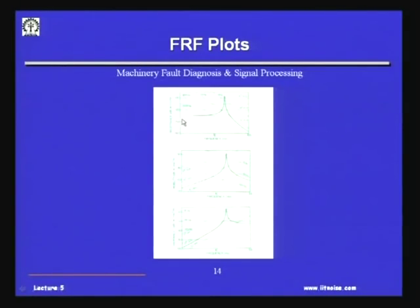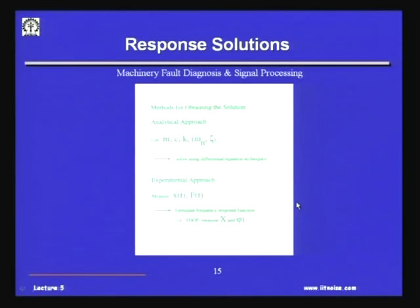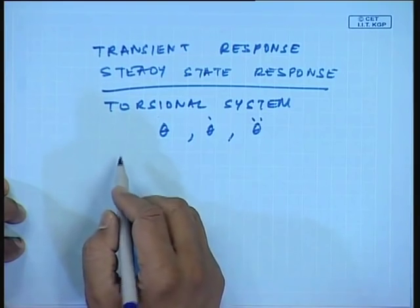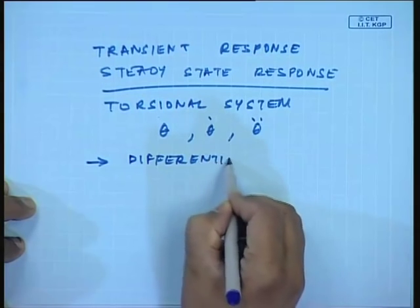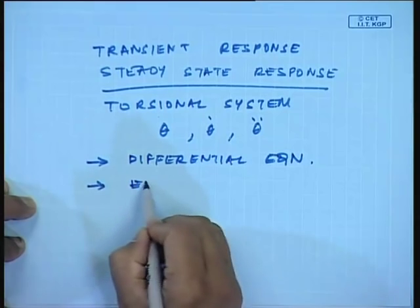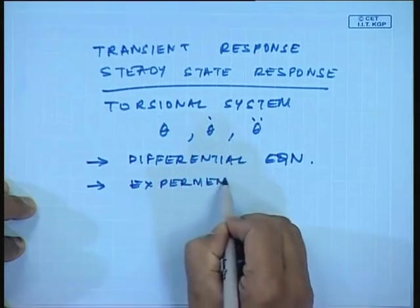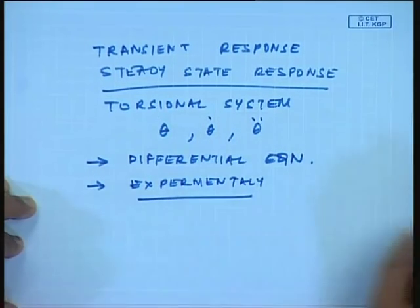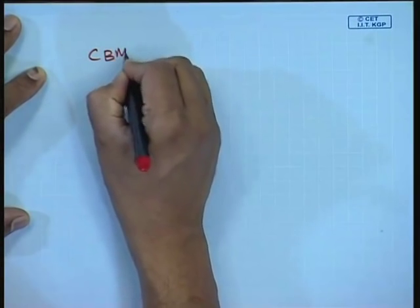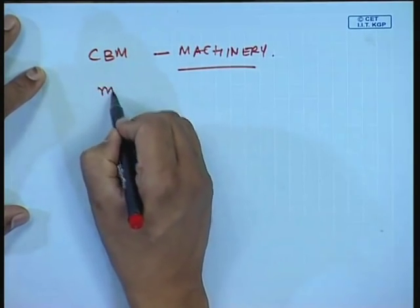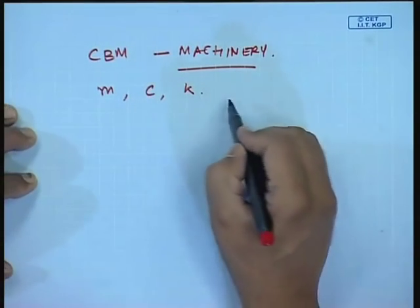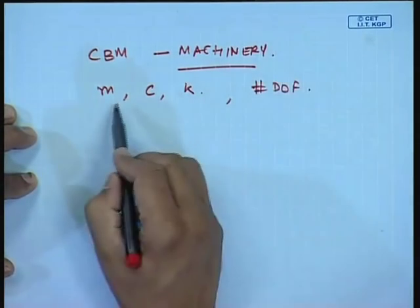These are a few plots of how the 6 different transfer functions look as a function of frequency — compliance, mobility, and inertance. The question is how to determine this transfer function. Of course, one way is to solve the differential equations; another is to determine them experimentally. Our focus is on how to implement CBM in machinery — for a real machine, we do not know its M, C, or K, and we do not know how many degrees of freedom exist or how they are related.